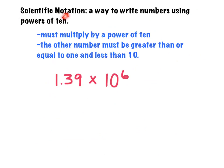Now today we're going to be working with scientific notation. Scientific notation is a way to write numbers using powers of 10. You're going to be using this in science next year and in math. It's a way to write really big numbers in a shorter way. When writing a number in scientific notation, a couple of things must be true. First, you must be multiplying by a power of 10, like 10 to the 6th, 10 to the 5th, or 10 to the 20th. The other number you're multiplying must be greater than or equal to 1 and less than 10.